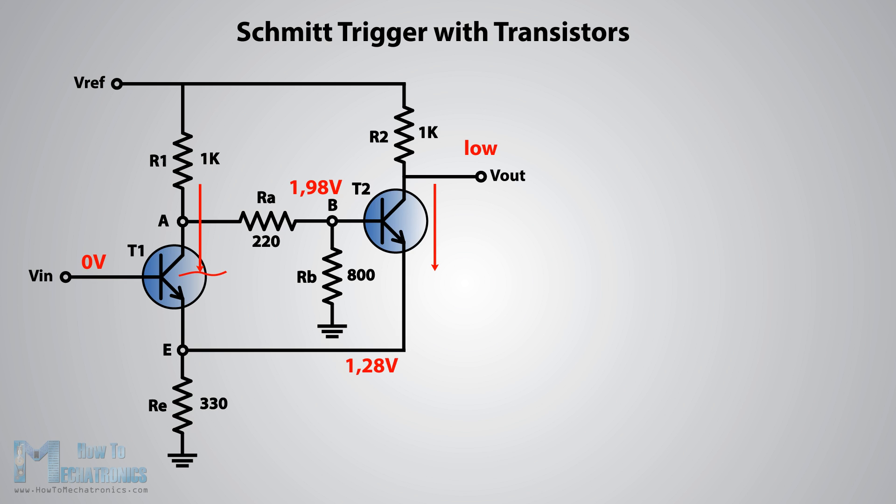So as we increase the VIN input and we cross this value of 1.98 volts, the transistor T1 will start conducting. This will cause the voltage at the base of transistor T2 to drop and will cut the transistor off. As transistor T2 is no longer conducting, the output voltage will go high.